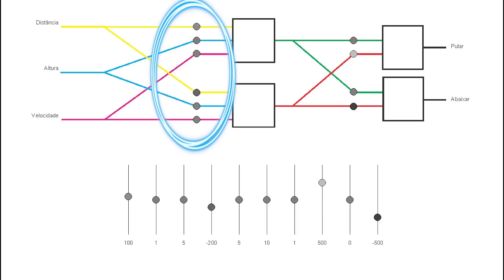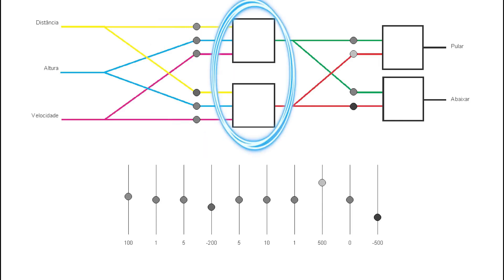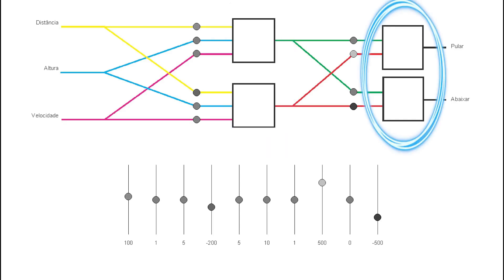Since we're multiplying, if the weight is a thousand for example, the information will grow a lot. If it's minus a thousand it will decrease a lot. The function of the neuron is very simple — it takes the weighted information, adds it up, and checks: if it's positive, it will send the information forward; if it's negative, it will emit a zero and cancel it out.